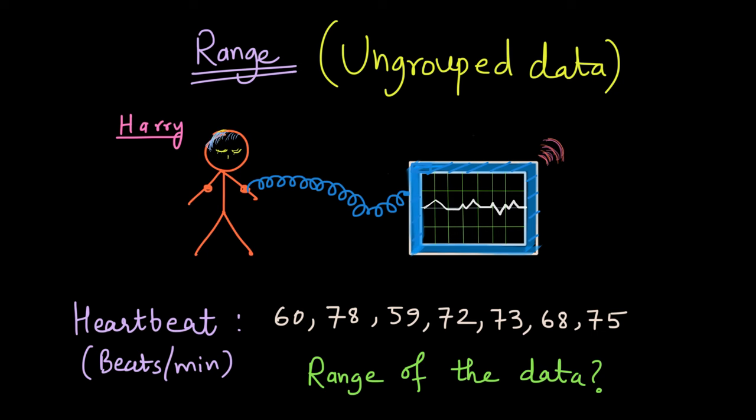To answer this, look at the data and spot two data points: the smallest, which is 59, and the largest, which is 78. To find the range, subtract the smallest from the largest. So the range is 78 minus 59, which equals 19.